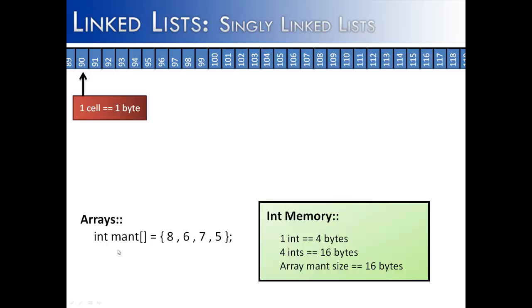I think this will help us understand how linked lists work as opposed to arrays. So I've created an array called mant, and I've put four values in it: 8, 6, 7, and 5.